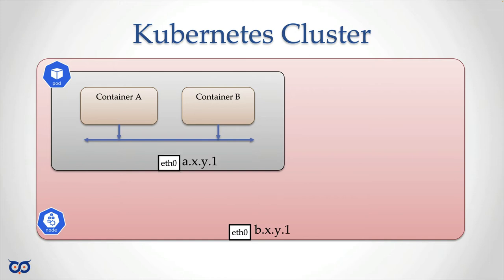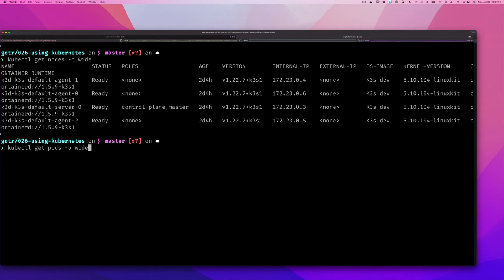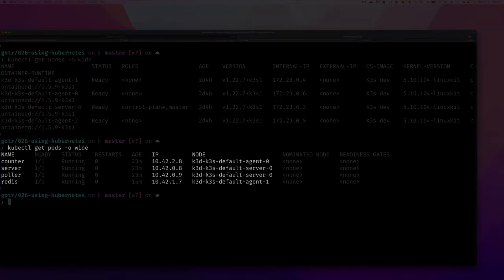That also means that since a pod looks like a host or virtual machine, it too has an ethernet interface and an IP address associated with it. This is true - we can go back to the command line and type kubectl get pods -o wide and we'll see that. If we have a few pods running, and in this example I have a few pods running, you can see each one of those pods have their own IP address.